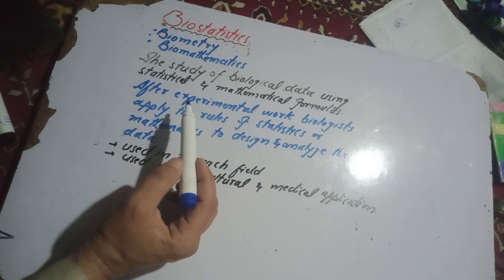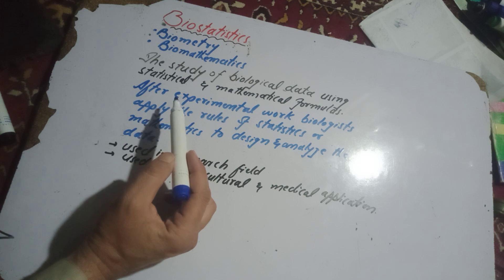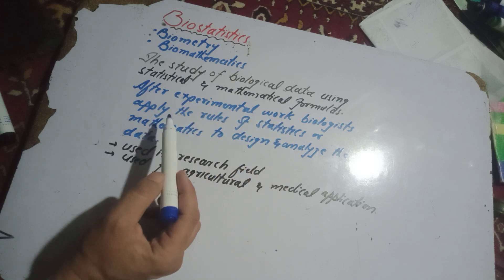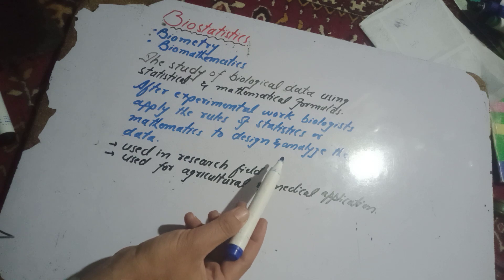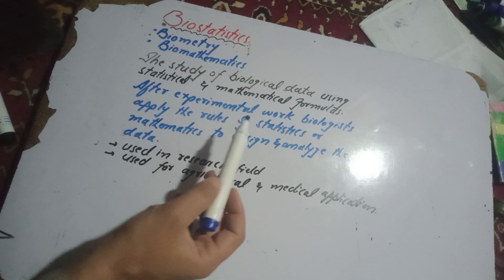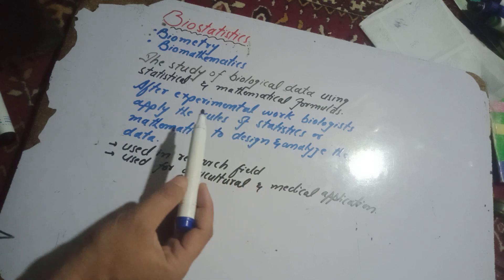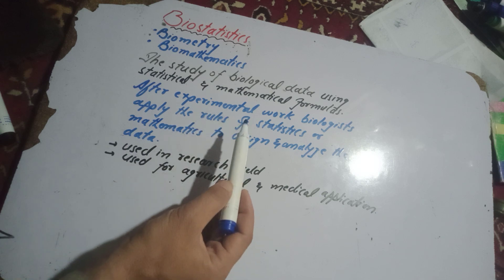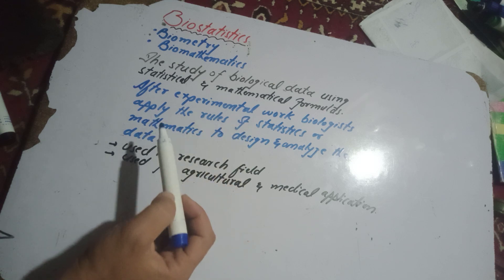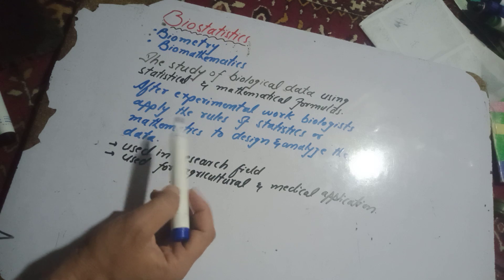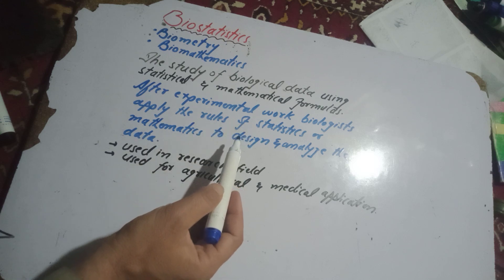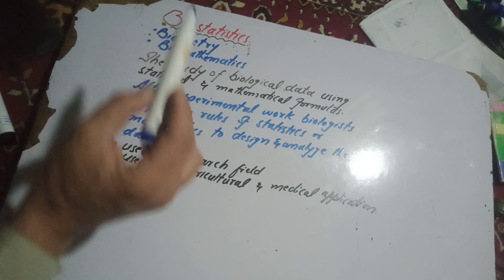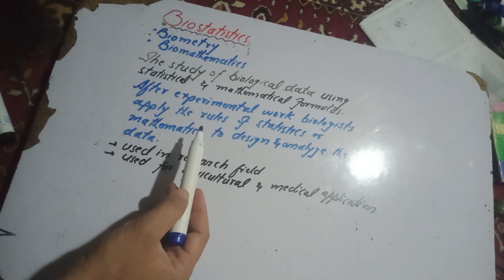When we have an experiment, after experimental work, biologists apply the rules of statistics and mathematics to design and analyze the data. We also use the statistical and mathematical formulas for the same data.